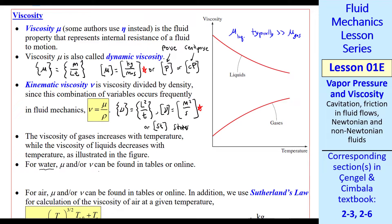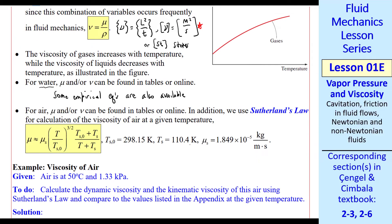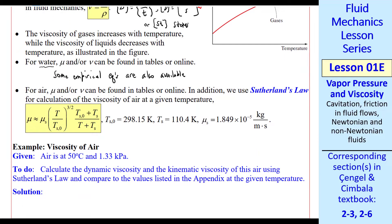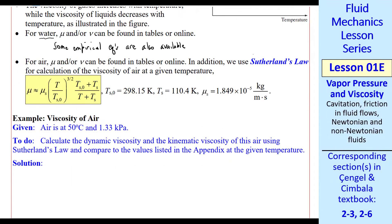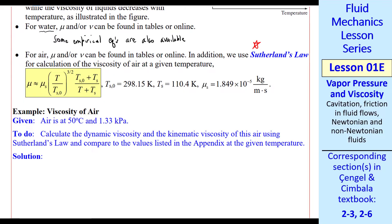For water flows, we can find mu or nu in tables or online. Some empirical equations are also available, but we won't discuss those here. For gases like air, you can also find mu or nu in tables or online. For air, we will always use Sutherland's Law, which is given here. This gives us mu as a function of temperature. Here's the equation, and these are the constants.